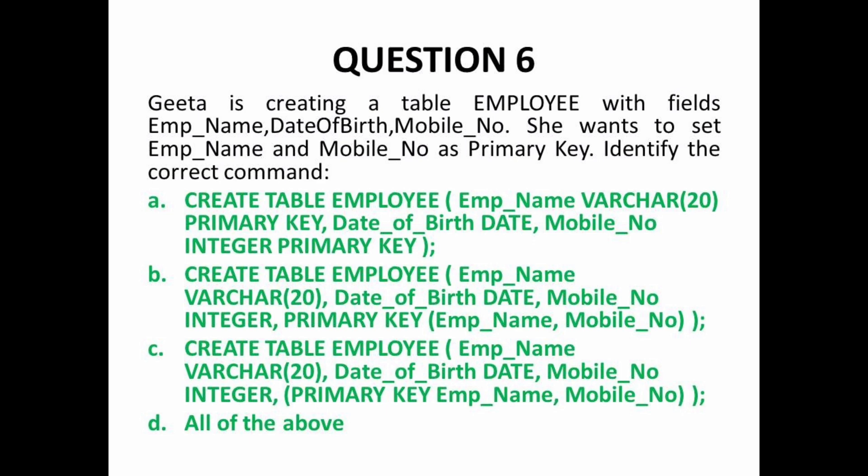Next MCQ: Geetha is creating a table 'employee' with fields employee_name, date_of_birth, and mobile_number. She wants to set employee_name and mobile_number together as a primary key. We discussed two methods: for a single-attribute primary key, write PRIMARY KEY after the attribute inline. But for two or more columns forming a composite primary key, we write it separately at the end as PRIMARY KEY(column1, column2). Option A incorrectly marks each column individually, while option B correctly mentions PRIMARY KEY with both column names inside parentheses — so option B is correct.